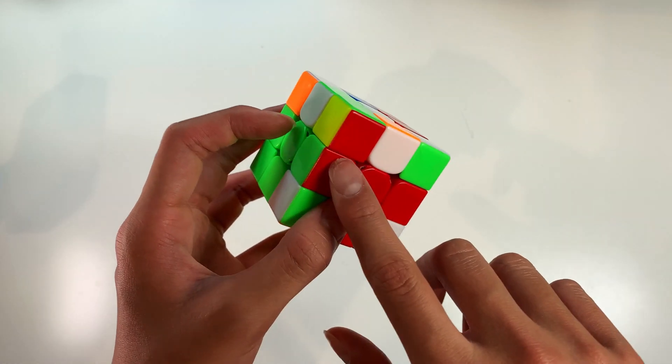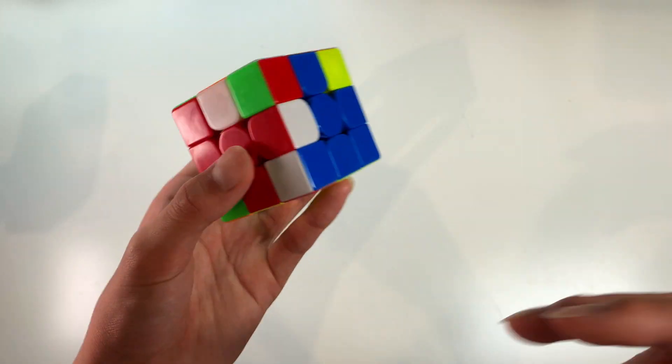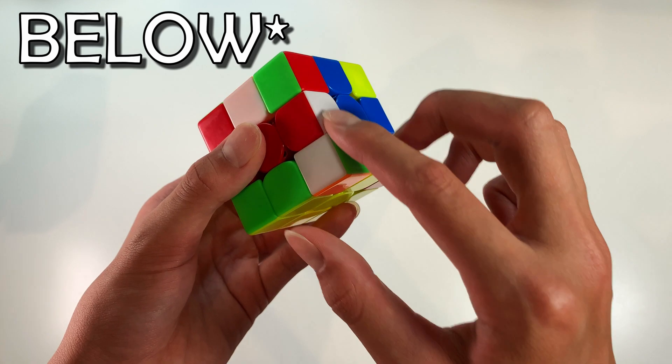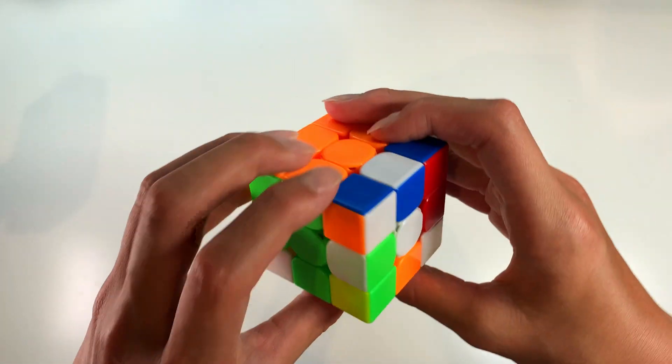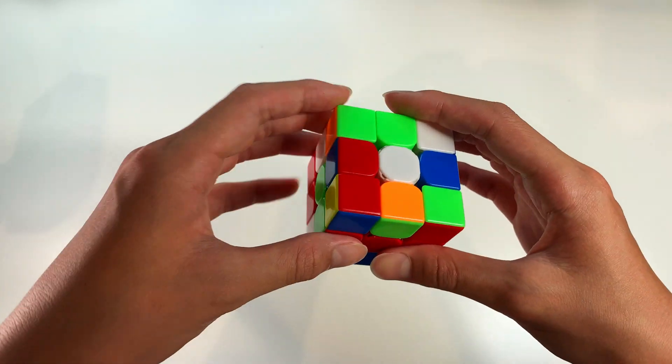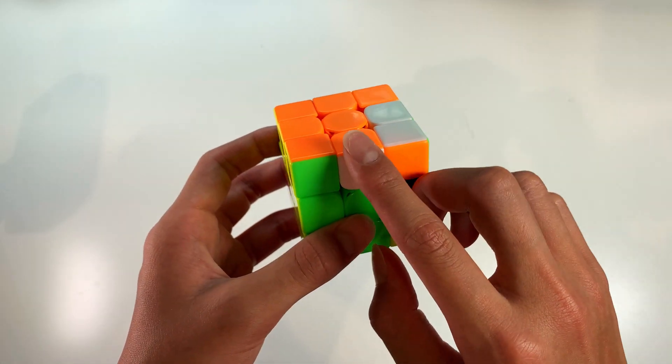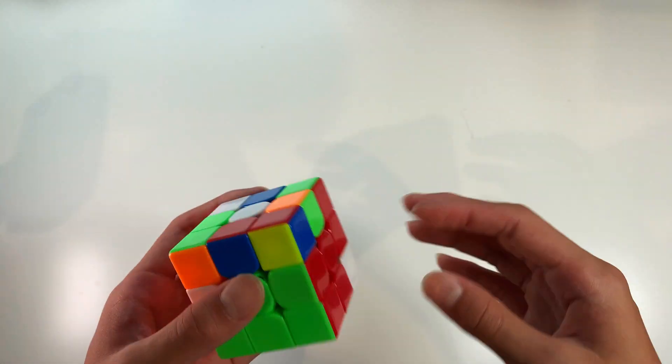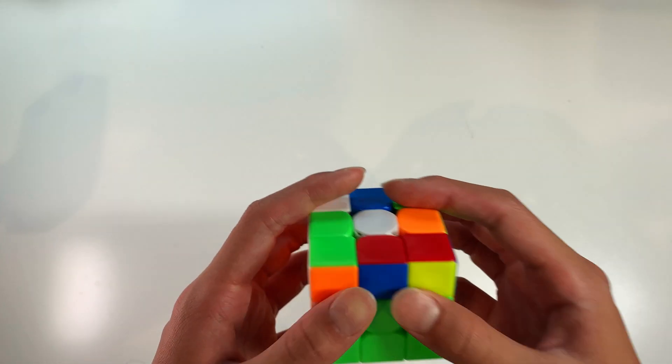Now in the case where the edge is solved but the corner is not and you want to use keyhole, make sure you move the unsolved slot over another unsolved slot. Whereas if you move it over a pre-solved slot already and then you insert this, that will actually mess up the pair. So whenever you're doing keyhole try to make sure that you're always making use of empty or unsolved slots to pair up your pieces.